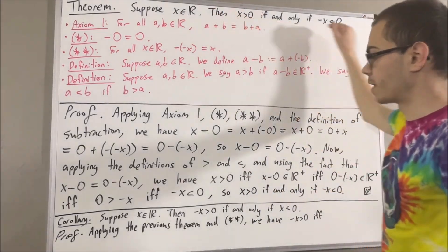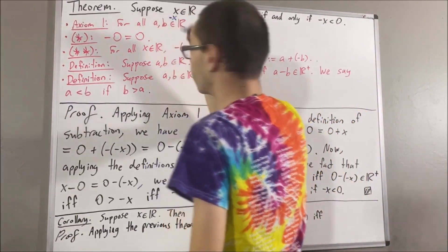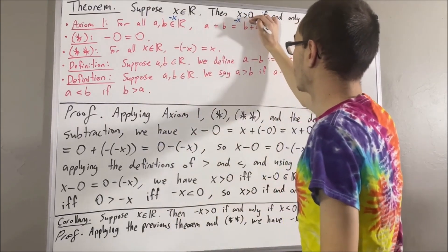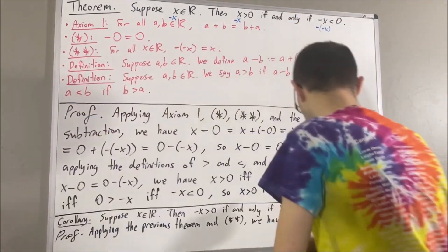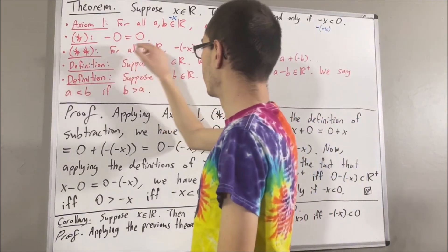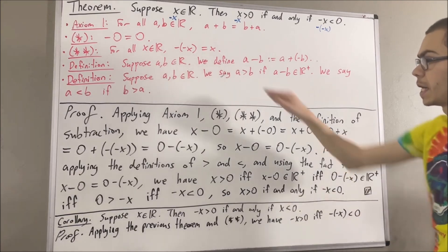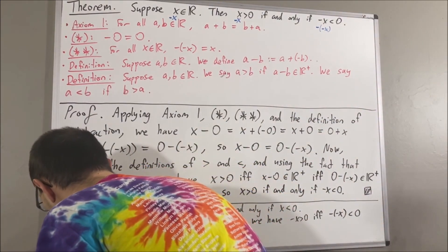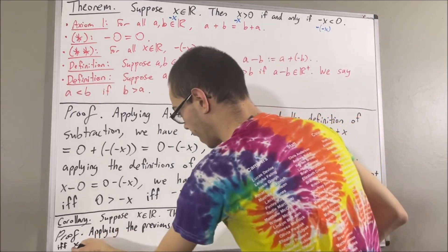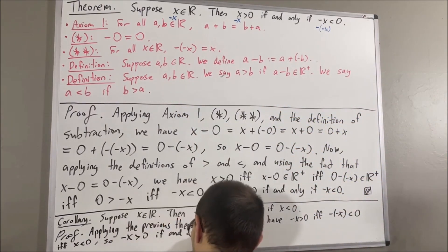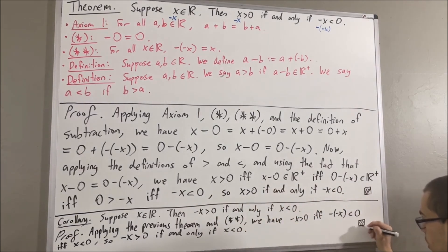By the previous theorem, if we take x to be negative x, then we have negative x is greater than zero if and only if the negative of negative x is less than zero. But according to the result that the negative of negative x equals x, to say that the negative of negative x is less than zero is equivalent to saying x is less than zero. So, through this chain of if-and-only-ifs, we have that negative x is greater than zero if and only if x is less than zero. And that is exactly what we wanted to prove. So this completes the proof.